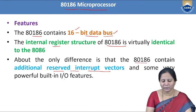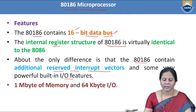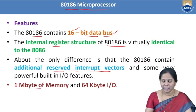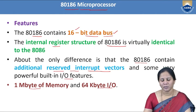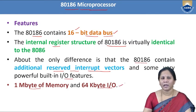The 80186 microprocessor also has powerful built-in I/O features. It has 1 megabyte of memory and 64 kilobytes of I/O — the same as the 8086 which also has a physical memory size of 1 MB. Additionally, it has 64 kilobyte I/O.